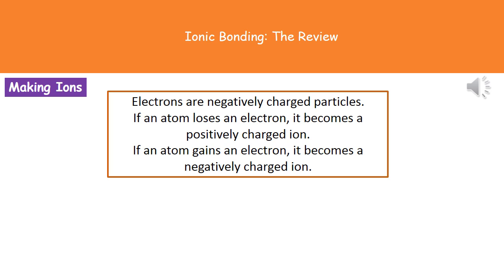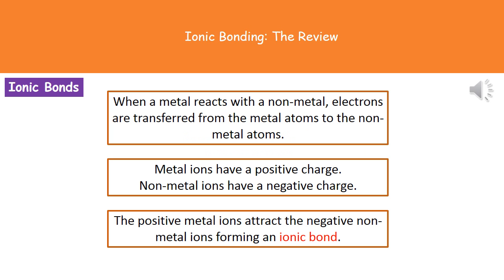If the opposite happens and the atom gains an electron, it will become a negatively charged ion, because it has one more negative charge than positive charges. In a reaction between a metal and a non-metal, electrons are transferred — they move from the metal atoms to the non-metal atoms. So the metal atoms lose electrons and become positively charged ions, while the non-metal atoms gain electrons and become negatively charged ions. These oppositely charged ions attract each other, forming an ionic bond.